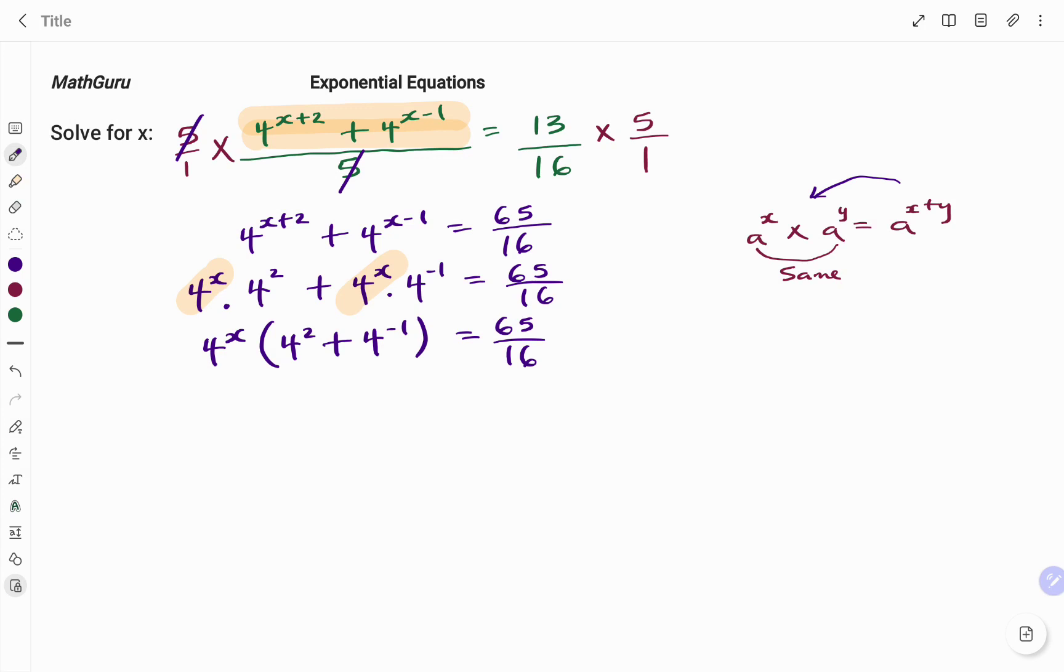I still have my 65 over 16. If I solve the content of the bracket, I have 4 to the power of x in bracket, 4 squared, that's 4 times 4, 16, plus an exponent. If I have a base raised to a negative exponent, to make it positive, it becomes a to the power of positive y. The negative becomes your fraction bar. So therefore, I have that as 1 over 4 equals 65 over 16.